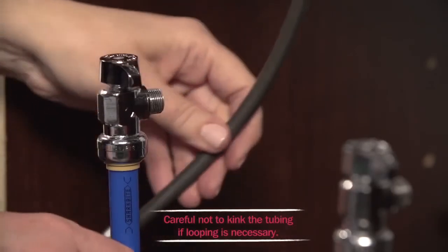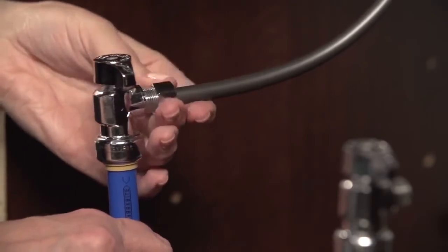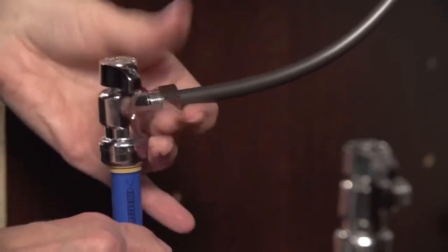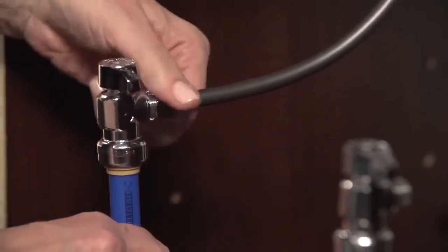Connect the cold water line to the cold supply line, then hand tighten the metal nut to a snug position. Once hand tightened, give it one more complete revolution with the wrench.